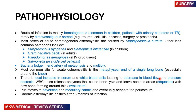Surrounding this area, new bone is also laid down — this is what we refer to as involucrum. Pus can move through the Haversian canals and medullary canals and eventually accumulates beneath the periosteum. Remember that chronic osteomyelitis will ensue after six weeks of infection.